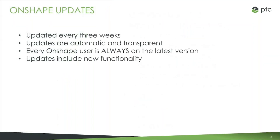Onshape puts out an update every three weeks, so we have quite a tight update schedule. All the updates are automatic for all users and transparent, so everyone is always going to be on the latest version of Onshape. Every update is going to include some new functionality as well as bug fixes and other things like that. So when we first post a new update, you're going to see a description of the updates in the forum. That's a good place to start. The day after we usually post a blog, and then every couple releases is when we do a webinar like this.